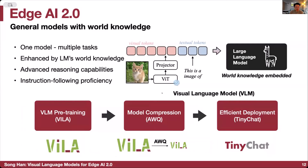This talk contains three parts. First, visual language model pre-training: the VILA visual language model, to appear at CVPR this year. The VILA 2.7 billion parameter model can be deployed on a Jetson Orin Nano. Then we'll talk about model compression and quantization for large language models — particularly AWQ, activation-aware weight quantization — which is the technique behind NVIDIA's Chat with RTX and NVIDIA TensorRT-LLM, to appear at MLSys this year, that can quantize visual language models and LLMs to 4-bit weight.